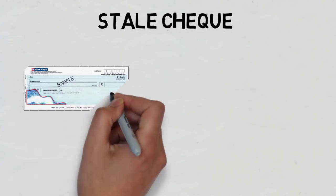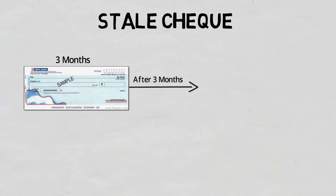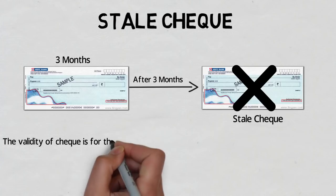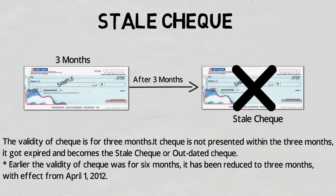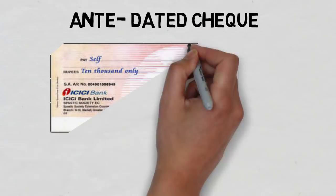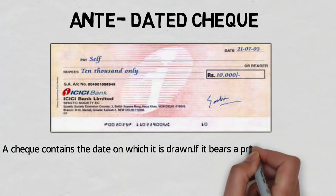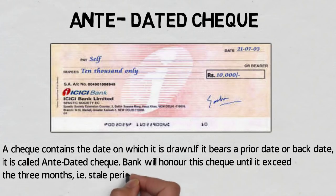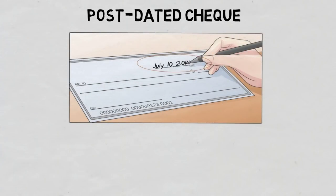The third type of check is the stale check. A stale check is valid only for three months; if the check is not presented within three months it expires and becomes a stale or outdated check. Earlier the validity was six months, but it has been reduced to three months with effect from 1st April 2012. Anti-dated checks contain the date on which the check is drawn; if it bears a prior or back date it is called an anti-dated check. The bank will honor this check until it exceeds three months, or until it becomes a stale check.